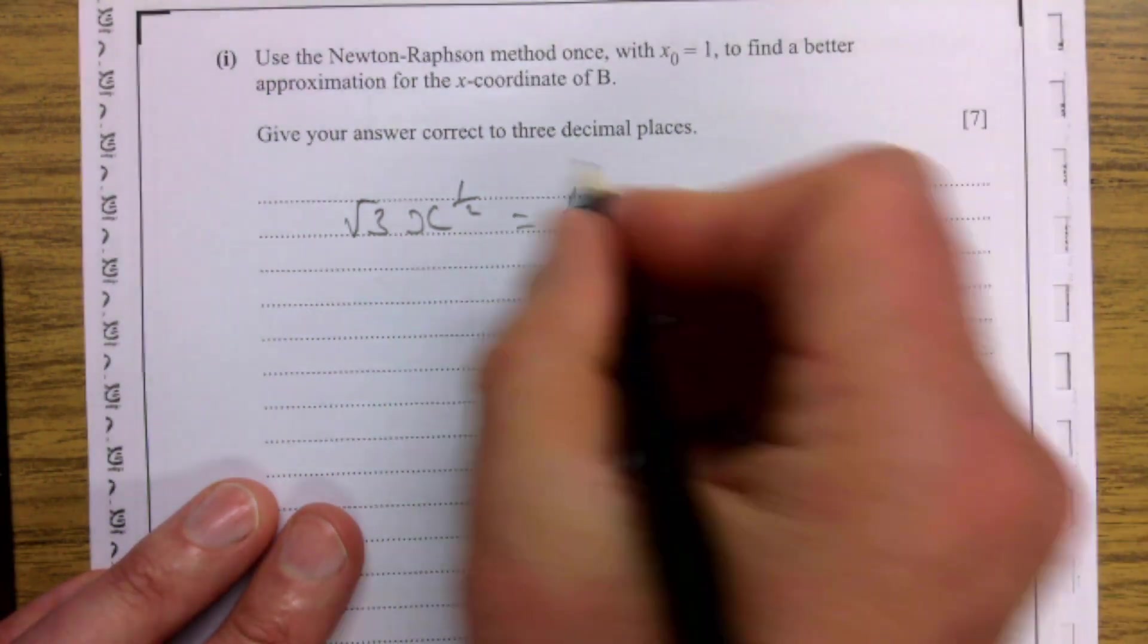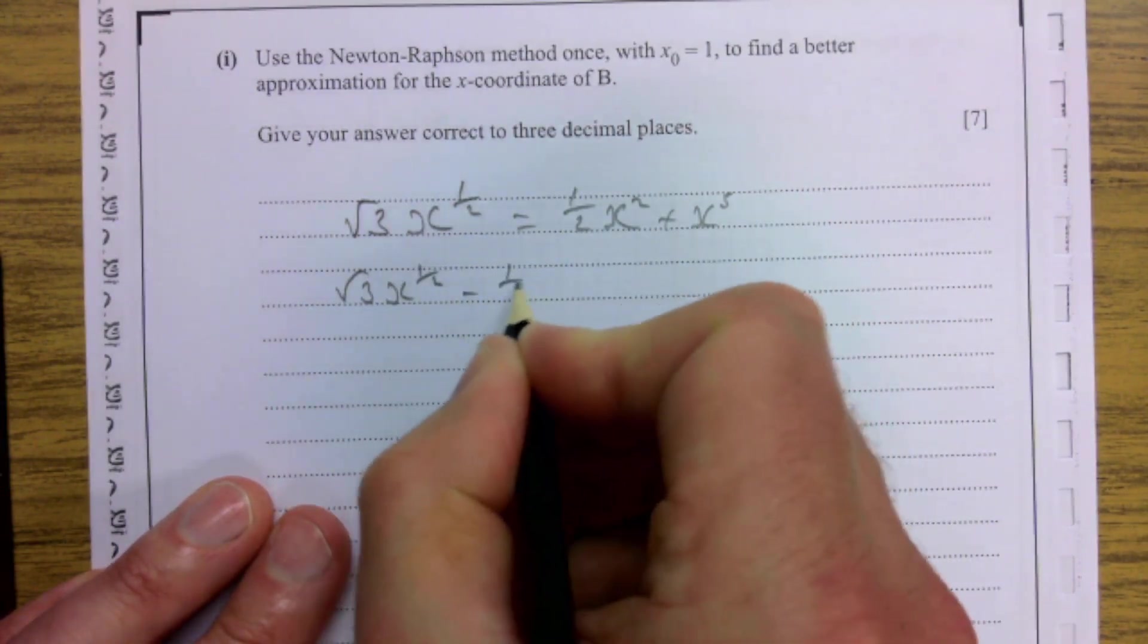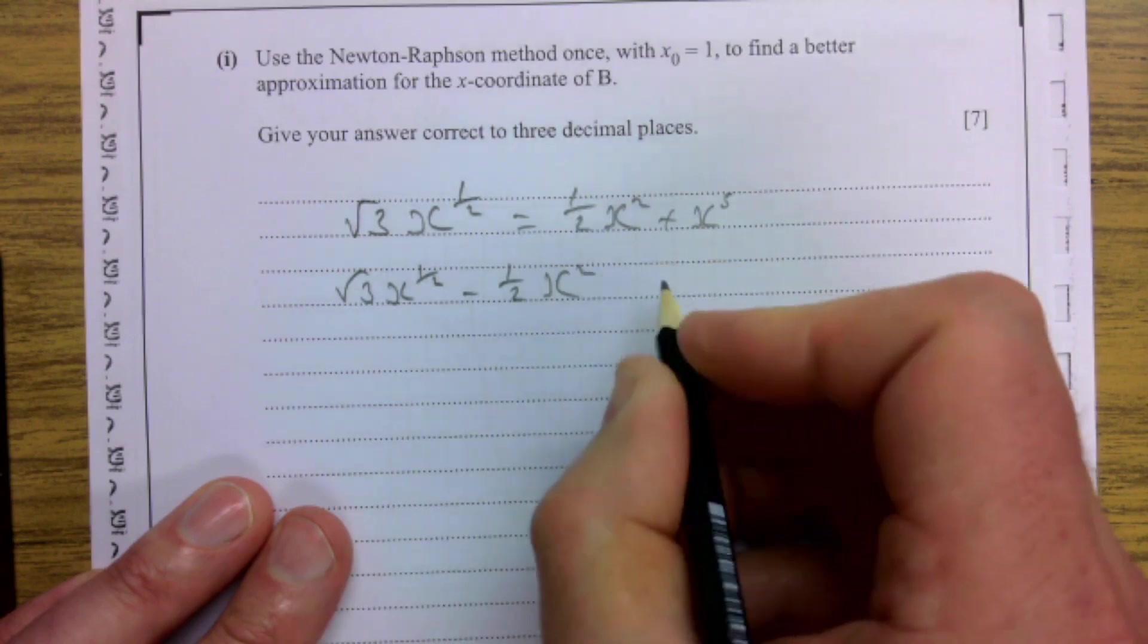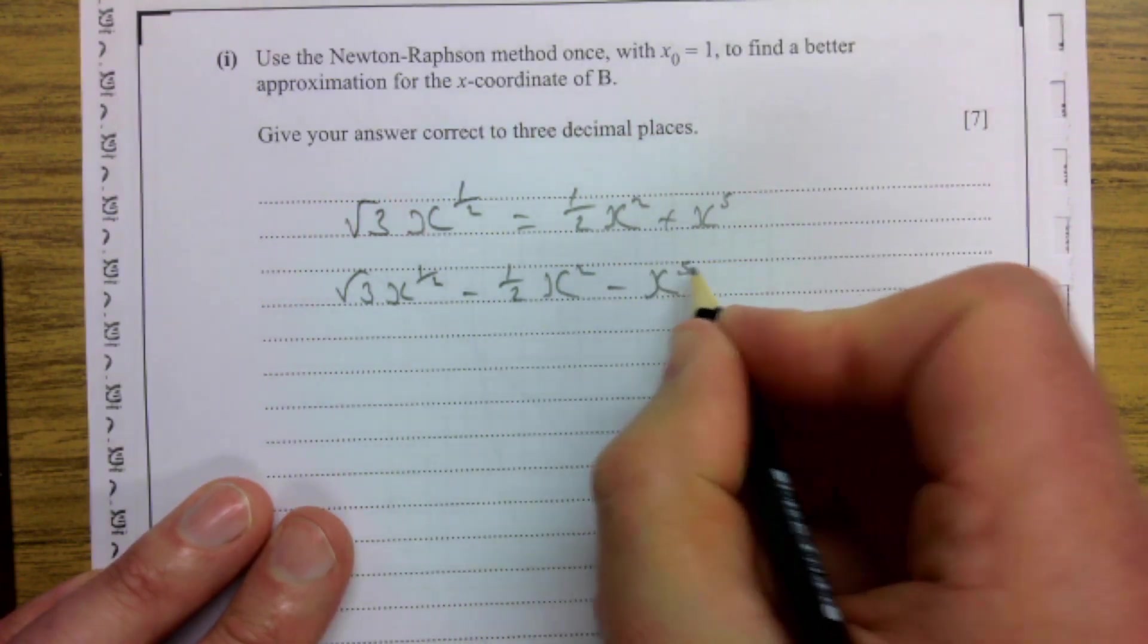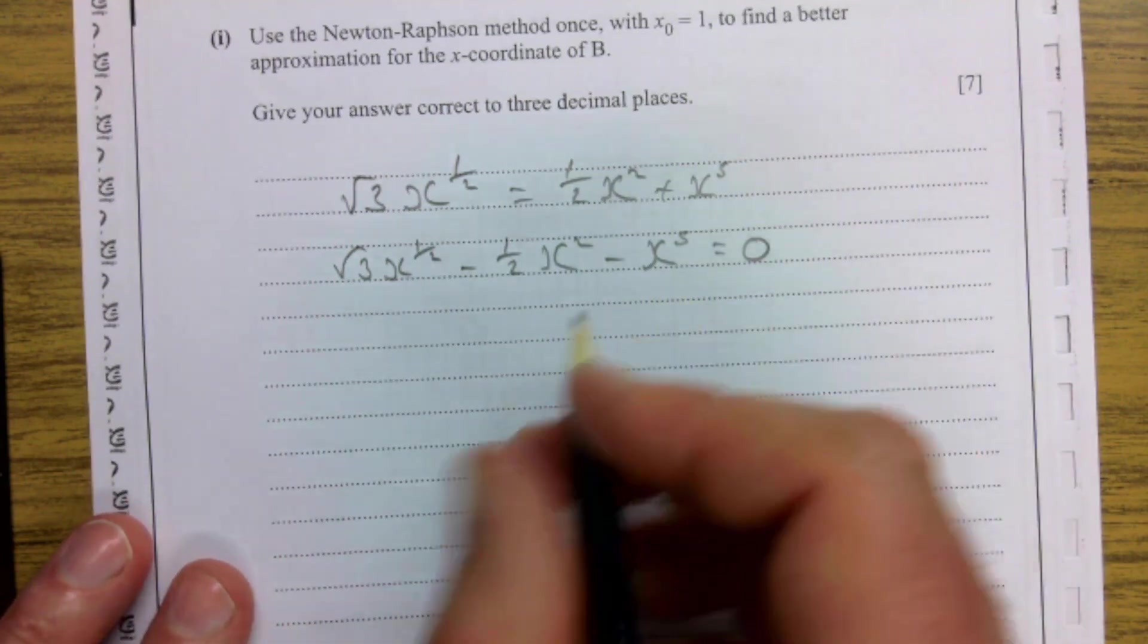I'm taking everything then to the one side. So it's √3 x^(1/2) - (1/2)x² - x⁵ equals 0. And I'm going to let that equal then to f(x).